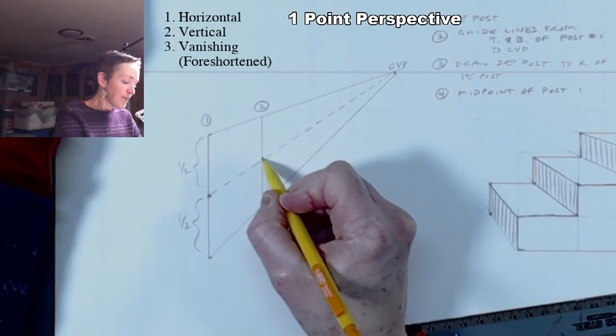So draw a really light line or a dotted line to indicate the halfway. So we've got the halfway point of post one. This is the halfway point of post two. Mark where the halfway point of post two is for us.